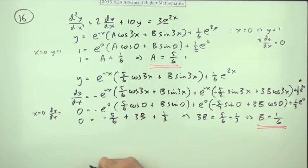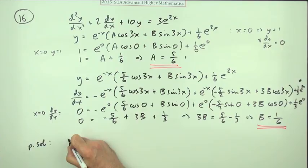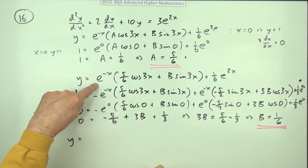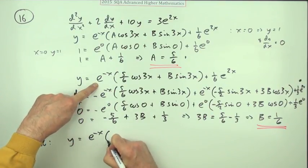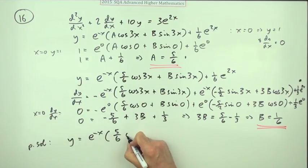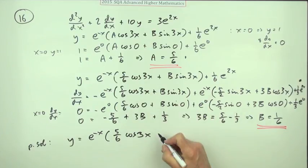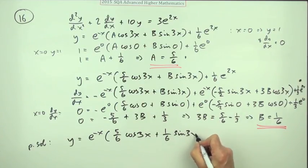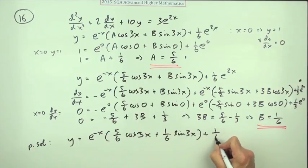So finally the particular solution is going to be y equals e to the negative x times 5/6 cos 3x plus 1/6 sine 3x plus 1/6 e to the 2x.